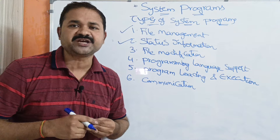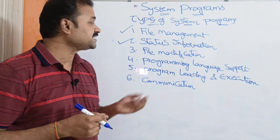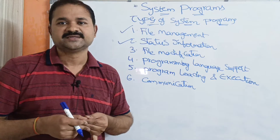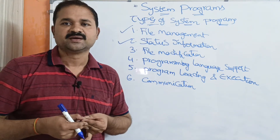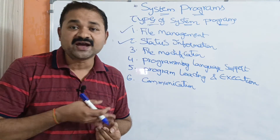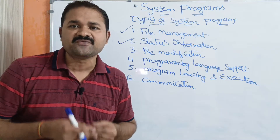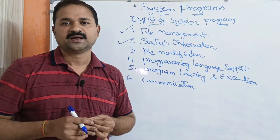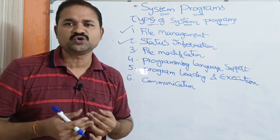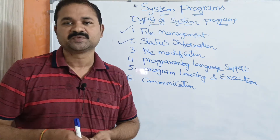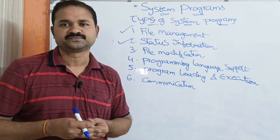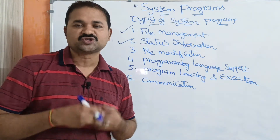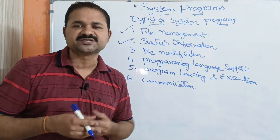The second type is the status information system program. It provides information about the system such as the system date, system time, available memory space, and available disk space. It also shows the number of users who are logged in, how many programs they are executing, and users' information such as how many files they have created and how much memory space they have used.